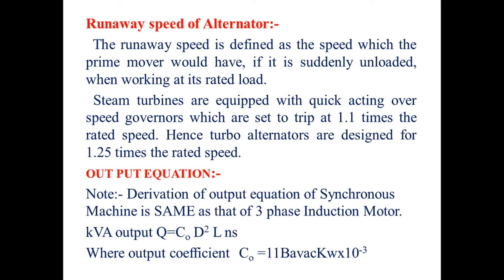Now coming to the actual syllabus: the first part is the output equation of the synchronous generator. The derivation of the output equation of a synchronous machine is similar to that of the three-phase induction motor studied in module four. The output equation is: Q = C₀ · D² · L · Ns, where C₀ is the output coefficient, D is the stator bore diameter, L is the core length, and Ns is the synchronous speed in RPS.